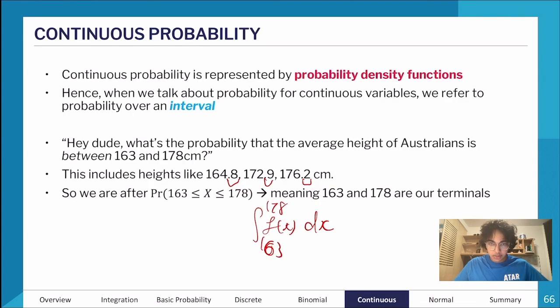When we're doing those calculations, 163 to 178 are going to be our terminals. Another thing to note is that for a continuous probability function, you can't find a particular case. I'll give you maybe a second to think about why this would be equal to zero. Type your answer in chat.